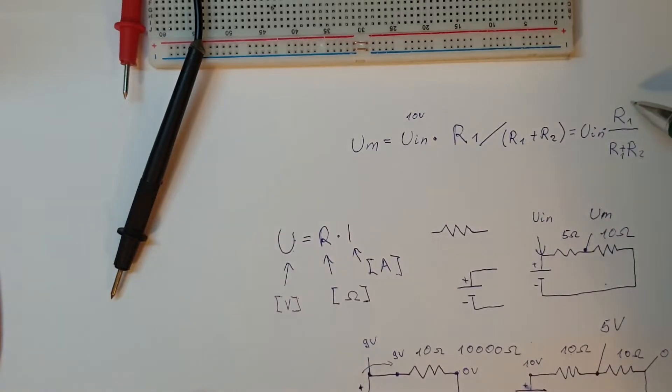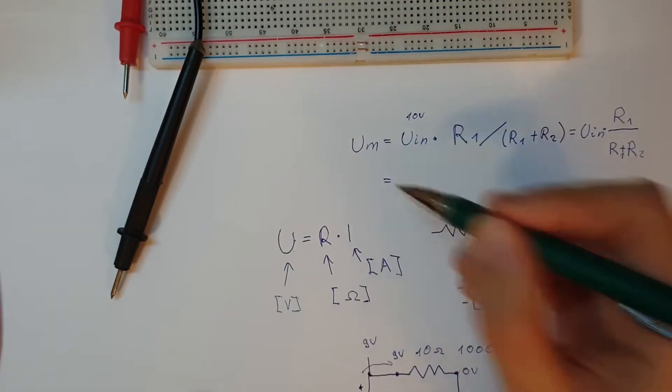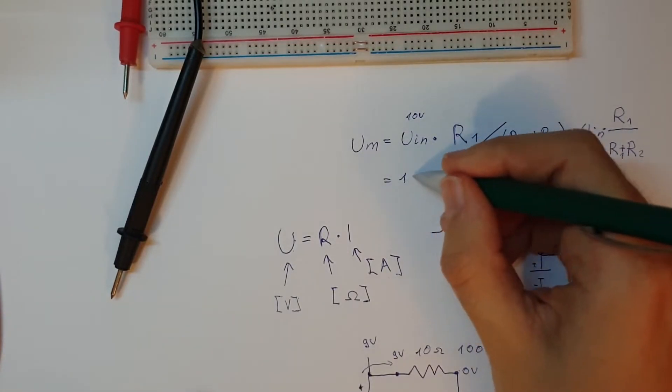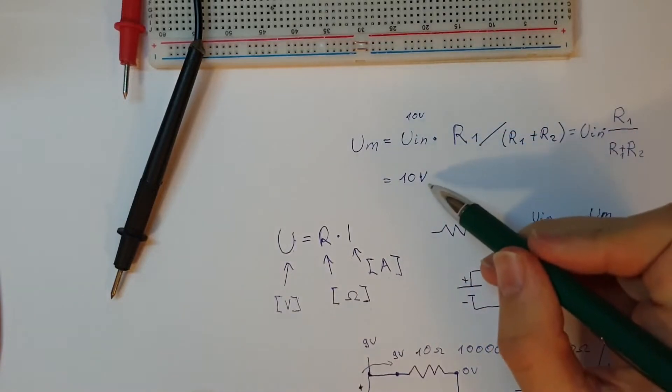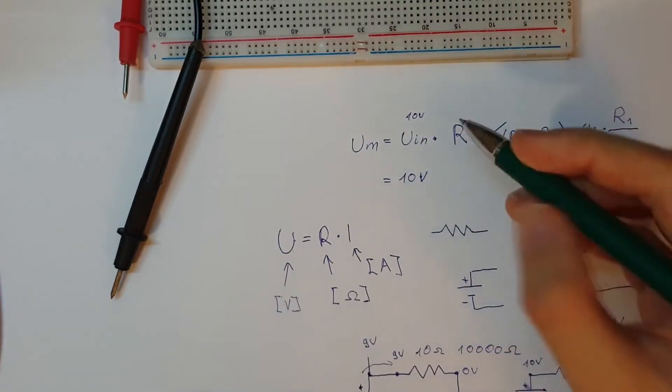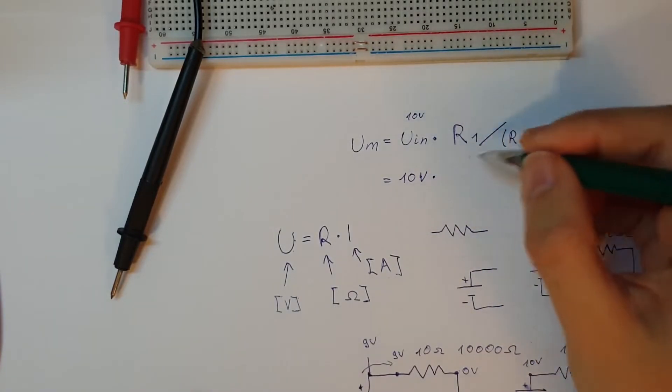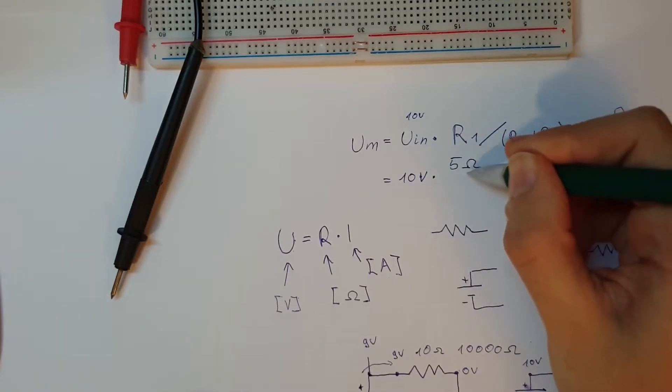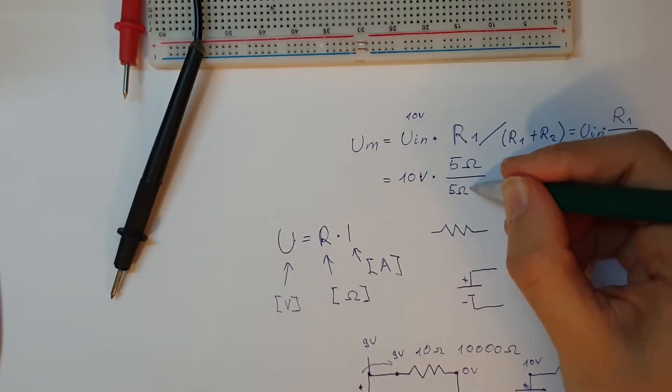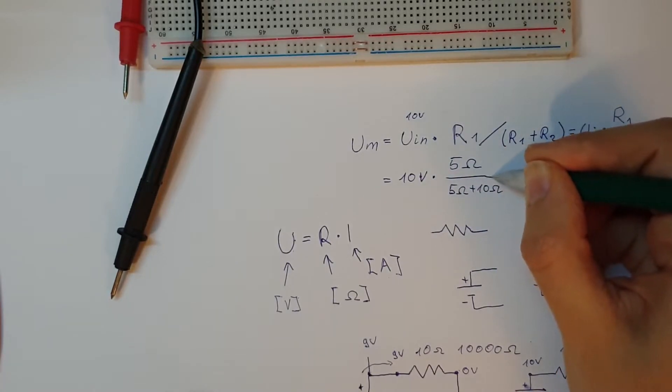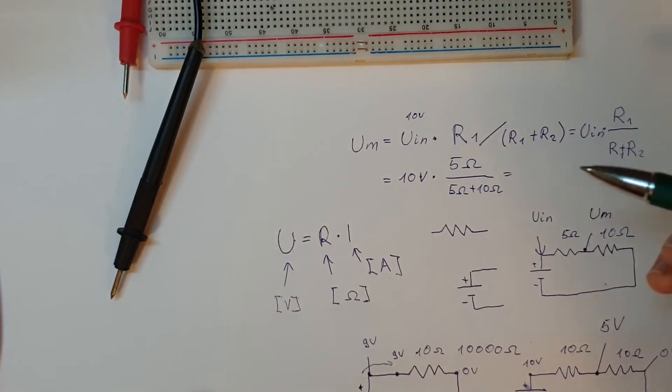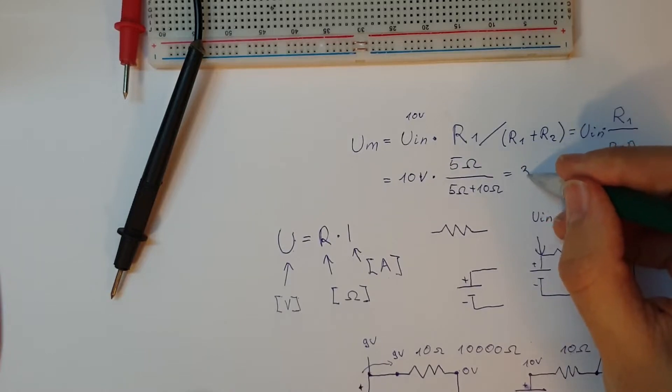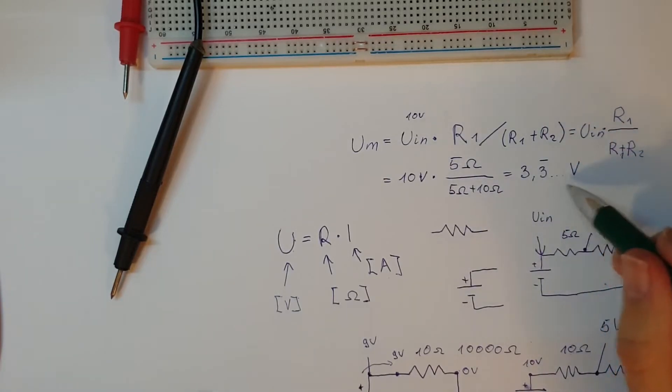In our example, we can use U in 10 volts. So, U in is 10 volts times R1 is 5 volts, I mean 5 ohms, divided by 5 ohms plus 10 ohms. And my superior mind has calculated this instantly. It is 3.3 and then a bunch of threes volts. Never forget the volt. You need to know which unit you use. So 3.3 volts. But enough theory. Using this formula, we will now show example. This is example. As you can remember, this is breadboard.